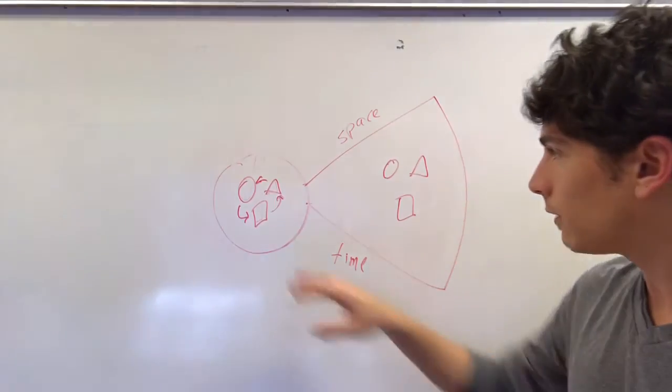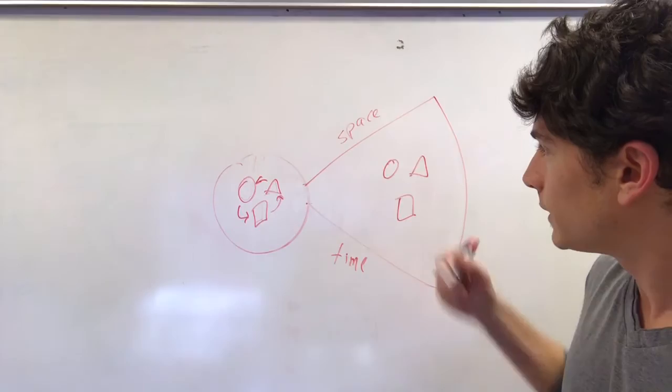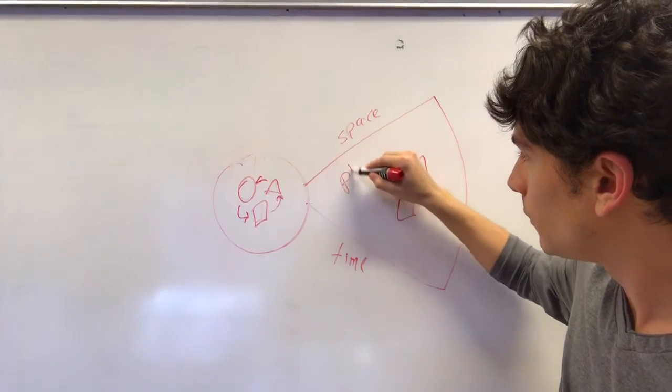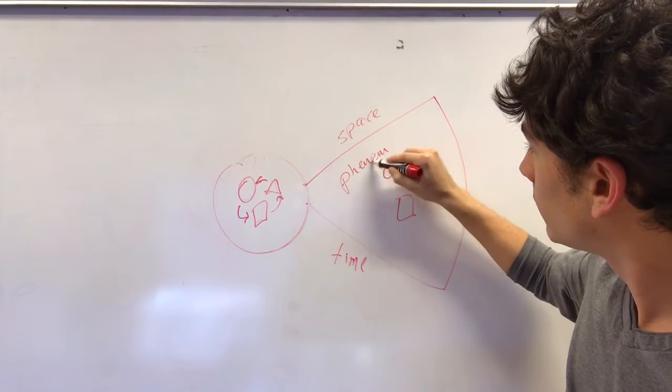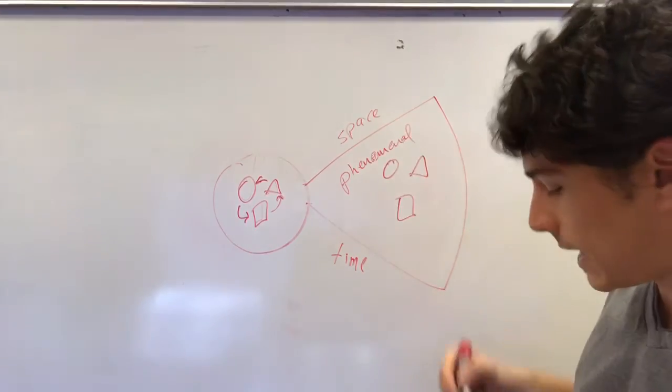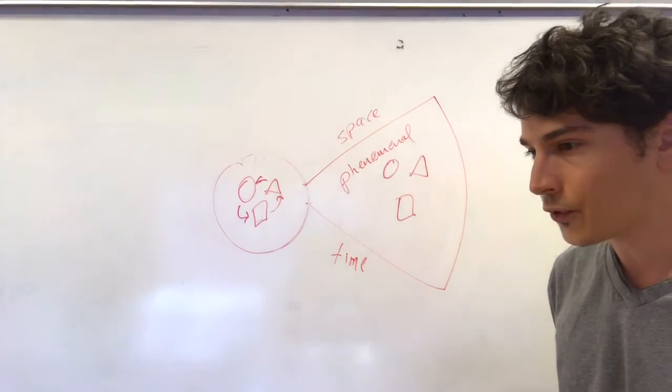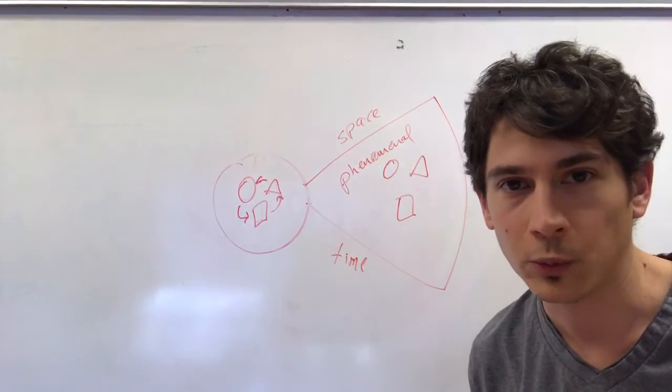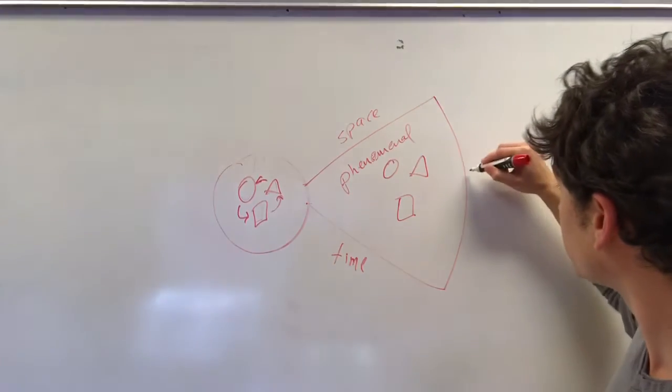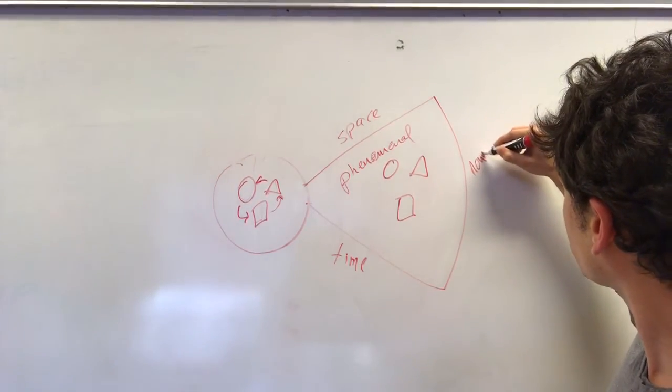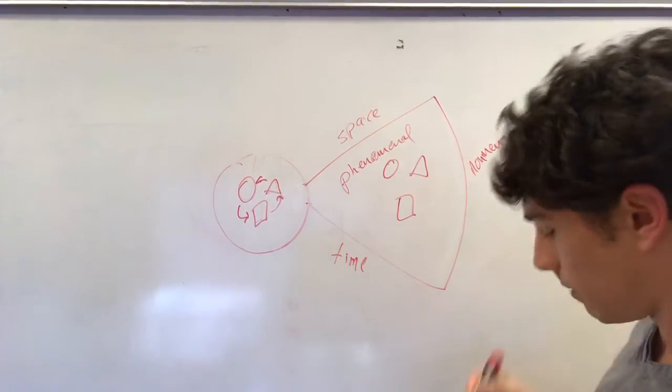So for Kant all of our knowledge of objects is limited to the phenomenal realm. And what there is beyond the phenomenal realm we can't say anything about other than that it exists. And so this is the realm of things in itself or as Kant also refers to it, the noumenal realm.